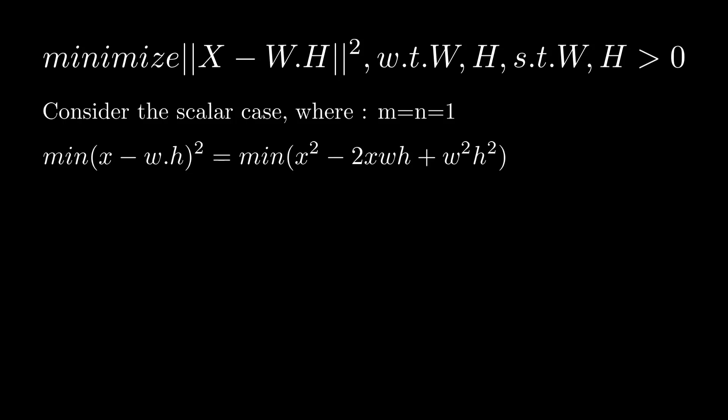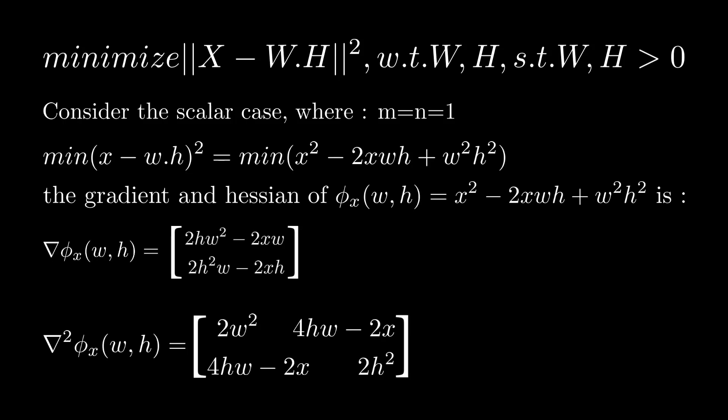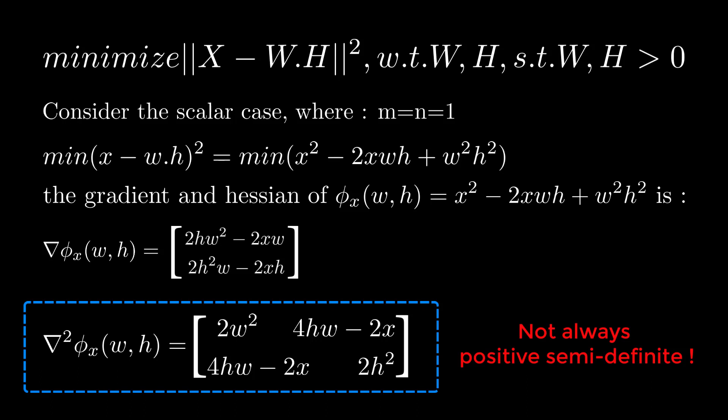Then the problem is going to be like this, and then if you compute the first and second gradient of it, we are going to see that the Hessian or the second gradient is not positive semi-definite for all the values of x, w, and h greater or equal to zero.